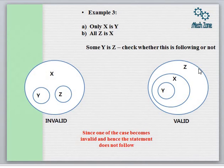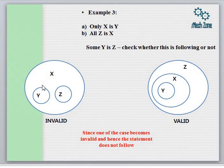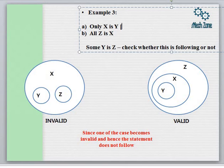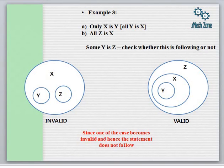We come to example number three, which is a third type of problem where we get words like 'only'. Only X is Y simply means All Y is X, so the statement is equivalent to All Y is X. In this third example we have been given: Only X is Y, which can be written as All Y is X. The next statement is All Z is X, meaning Z is also lying entirely inside X.